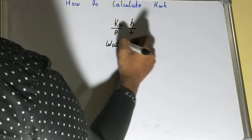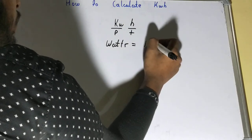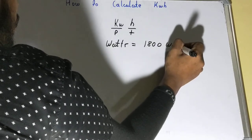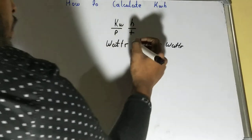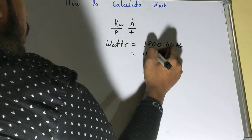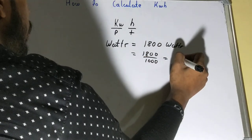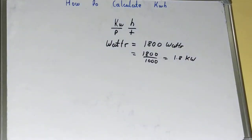So generally what happens is your power is given in terms of just watts, like your 1800 watts. Then what you can do is you can find out the power in terms of kilowatts. How? By just dividing the value by a thousand. So it will be 1.8 kilowatts. That is basically the power.